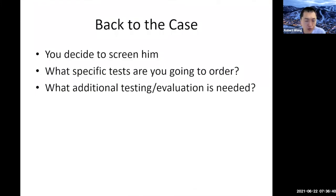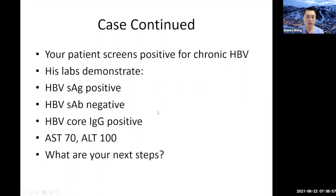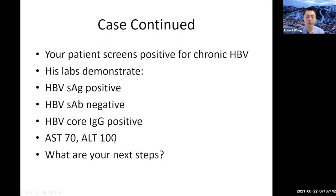Back to the case: this was a 50-year-old Vietnamese man establishing care. We do decide to screen him for hepatitis B, and this is what his tests show: surface antigen positive, surface antibody negative, core IgG positive, AST 70, ALT 100. Core antibody means exposure — this patient has been exposed, doesn't have immunity, but has chronic infection. So this person likely has chronic hepatitis B infection. ALT of 100 is clearly elevated — recent guidelines suggest normal for men should be less than 30 to 35 — and represents some degree of hepatitis.